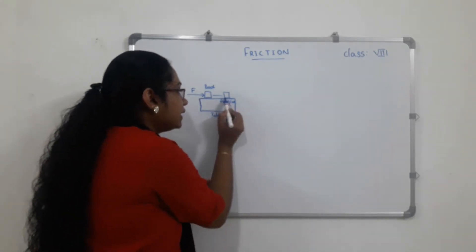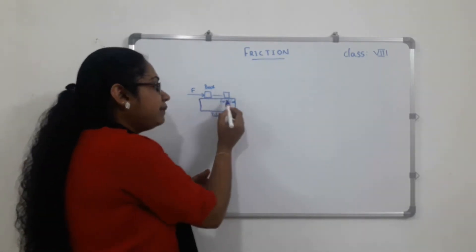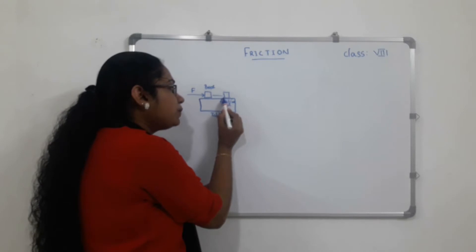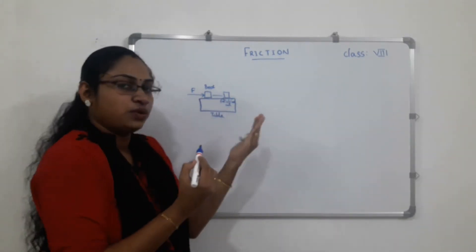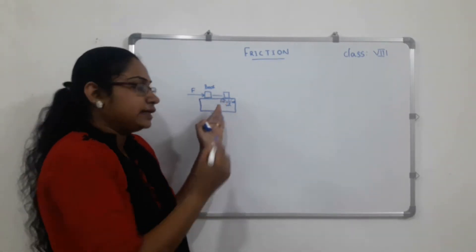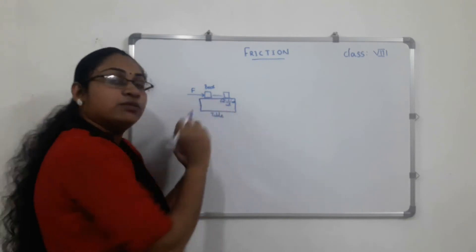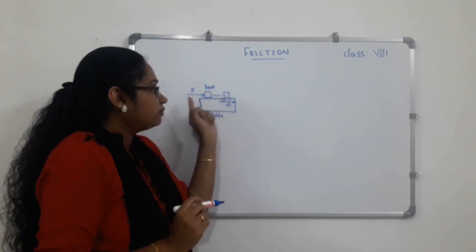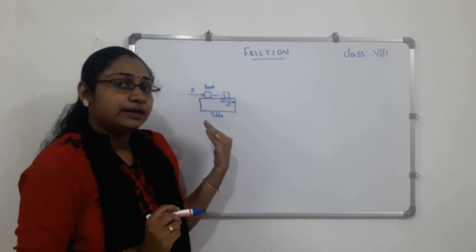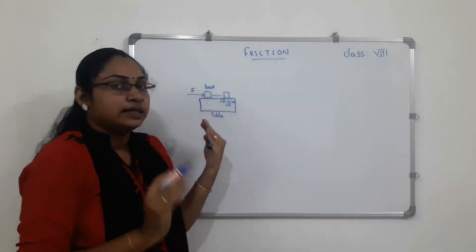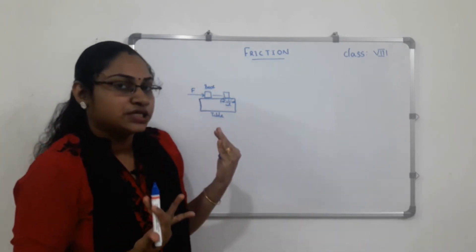If you move this book, you can move it along the table surface. The table surface exerts an opposite force on the book. That is why the book stops. That opposite force is called the Frictional force.